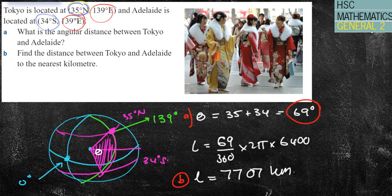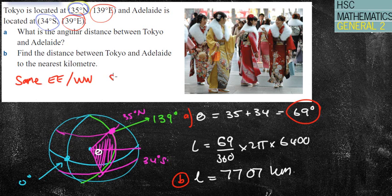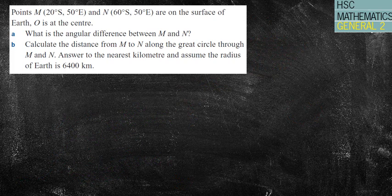So it's easy to see which two values to use and whether to add or subtract to get the angular distance. To recap: if they're the same — both east or both west — subtract the angles. If they're different — one east and one west, or one north and one south — add the angles. If you're not sure, just draw it out.